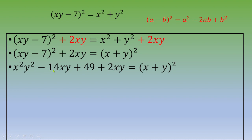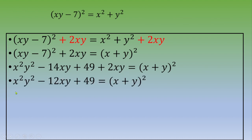Now rearranging — combining minus 14xy and plus 2xy — you end up with x squared y squared minus 12xy plus 49 equals (x plus y) squared.